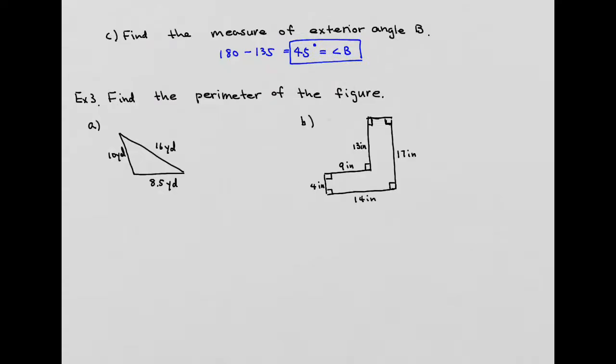So the last section, last example of this section is finding the perimeter of a given shape. So basically perimeter is going to be adding all the lengths of the sides of the shape, right? So this first graph, I have a triangle. Triangle means three sides.